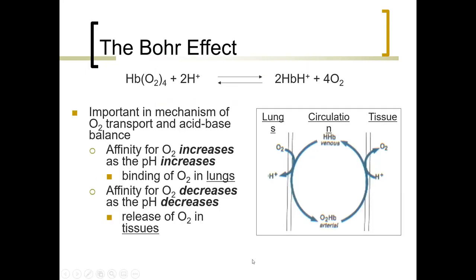The Bohr effect is important in the mechanism of oxygen transport and acid-base balance. Affinity for oxygen increases as pH increases, facilitating binding of oxygen in the lungs. Affinity for oxygen decreases as pH decreases, causing release of oxygen in the tissues.